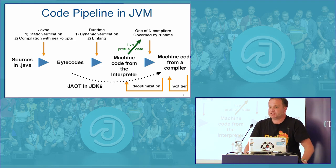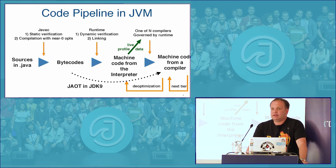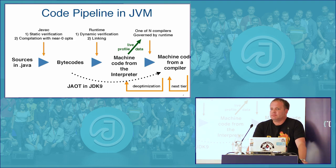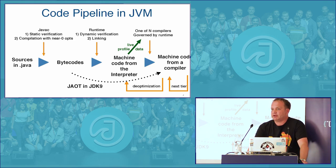Sometimes deoptimizations happen — I'll talk about those — and if they do, execution transfers back to the interpreter, and we go through this lifecycle again. In Java 9, there is an ahead-of-time compilation mode where the compiler prepares machine code in advance. But because of possible deoptimization, it's still subject to the same lifecycle. That's the only change in Java 9; before that, this picture was nearly the same for over 10 years.